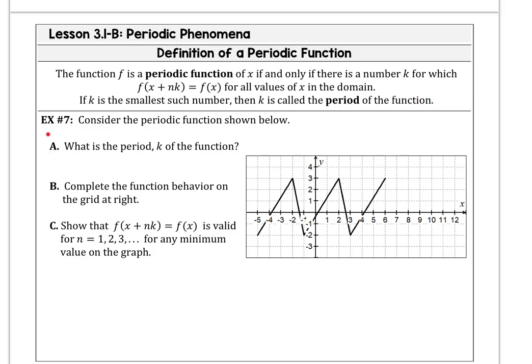Let's experiment with that. In example 7, consider the periodic function shown in our graph. What would the period of the function be and what is the value of k? In this case, it looks like every four units we have a new end of a cycle. If we complete the function behavior on the grid at right, we would go from 6,3 to 7, negative 2, and then from 7, negative 2 over to 10, 3, then from 10, 3 to 11, negative 2, and then we would repeat that pattern.